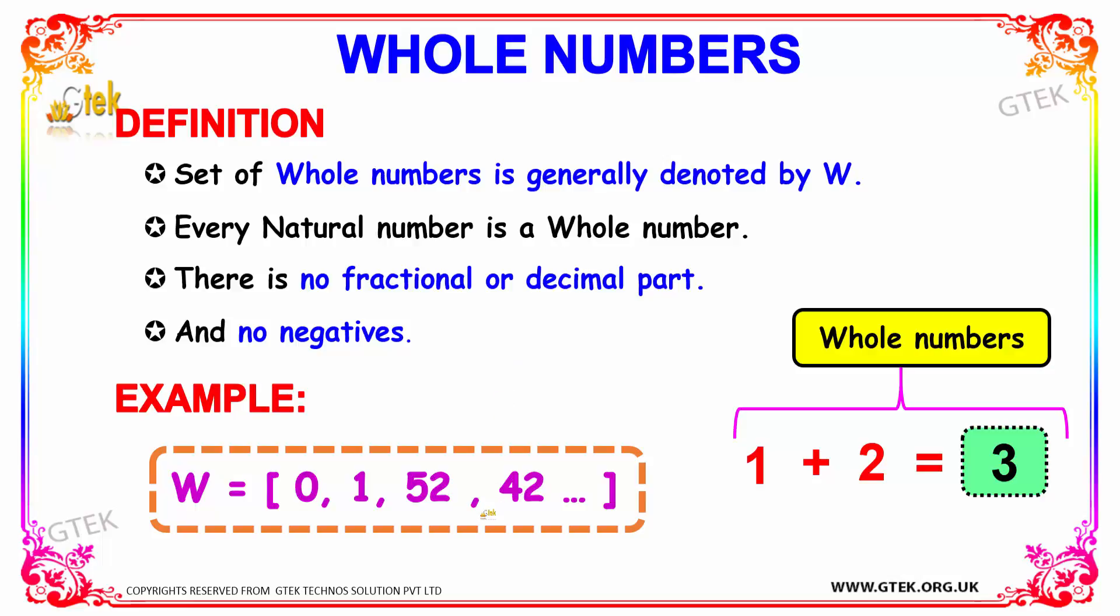We have an example over here for whole numbers. Since W is the representation for a whole number, we have denoted it as W. Along with that, we can have some examples: 0, 1, 52, 42. These are some examples of whole numbers.